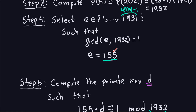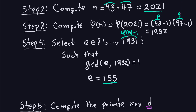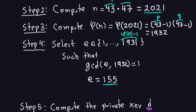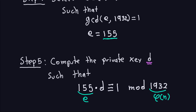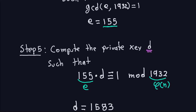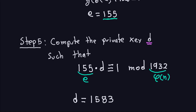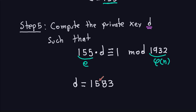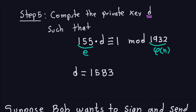So E = 155 is our public exponent and n = 2021 is the modulus. Now we compute the private exponent d, which must satisfy E·d ≡ 1 (mod phi(n)), i.e., 155·d ≡ 1 (mod 1932). This is a linear modular equation solved using the extended Euclidean algorithm, giving d = 1583. You can verify: 155 × 1583 ≡ 1 (mod 1932).